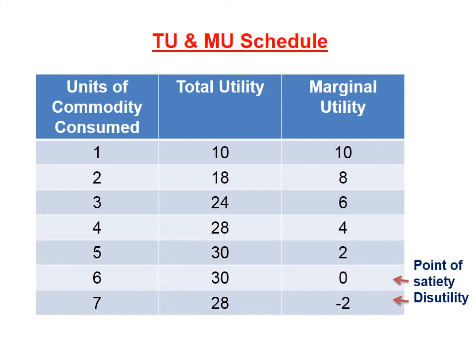Looking at the total utility numbers: 10, 18, 24, 28, 30, 30, 28 — TU goes on rising. For marginal utility, the numbers are: 10, 8, 6, 4, 2, 0, −2. So with the consumption of each additional unit of commodity, marginal utility goes on falling.